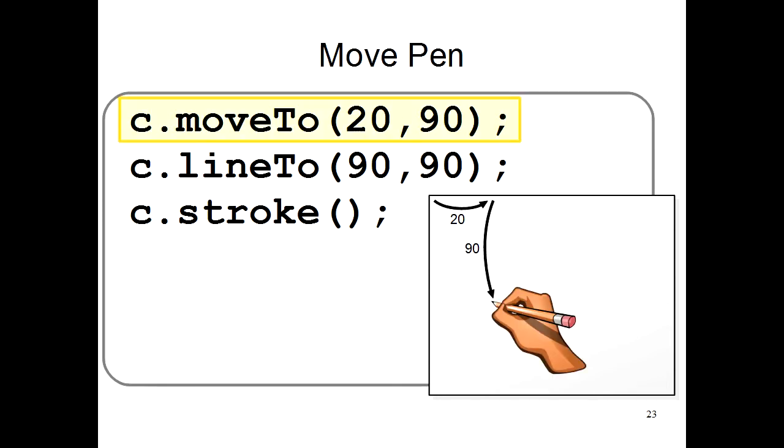In your program, the first command is c.moveTo. The c is for canvas. MoveTo tells the computer that you want to move the pen somewhere. And 20,90 is the position where you want the pen.